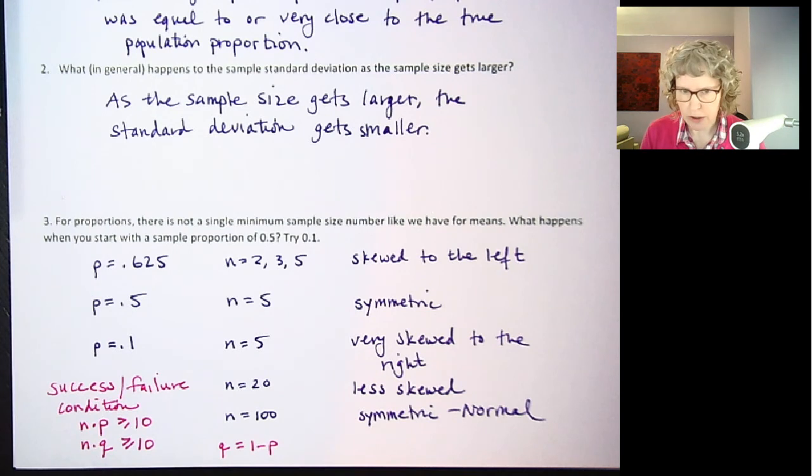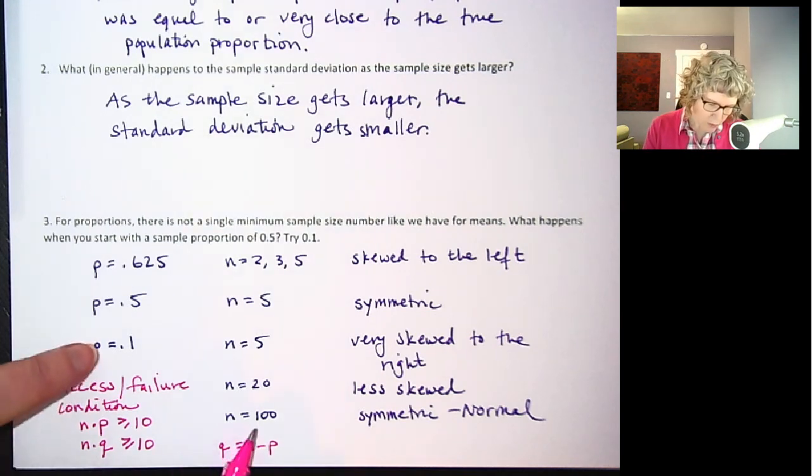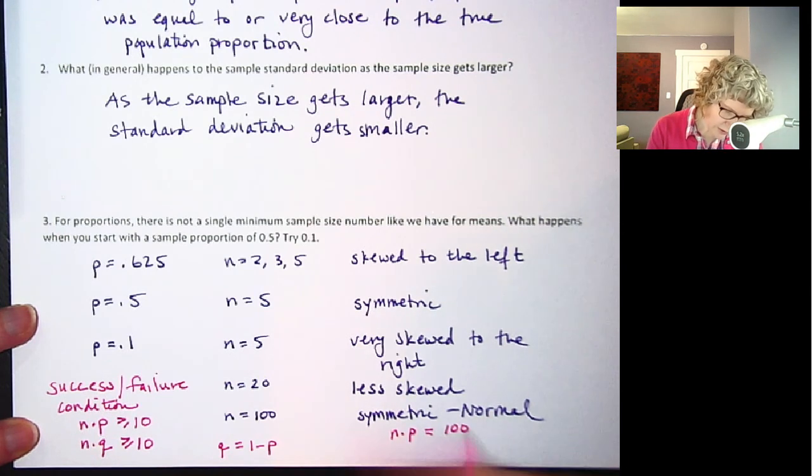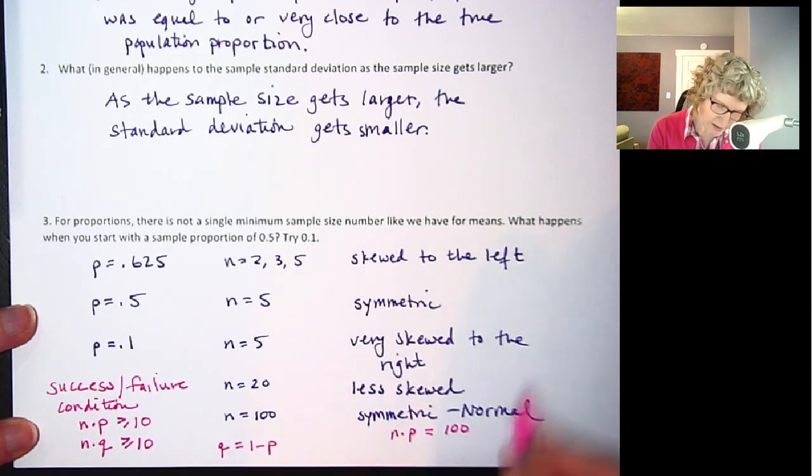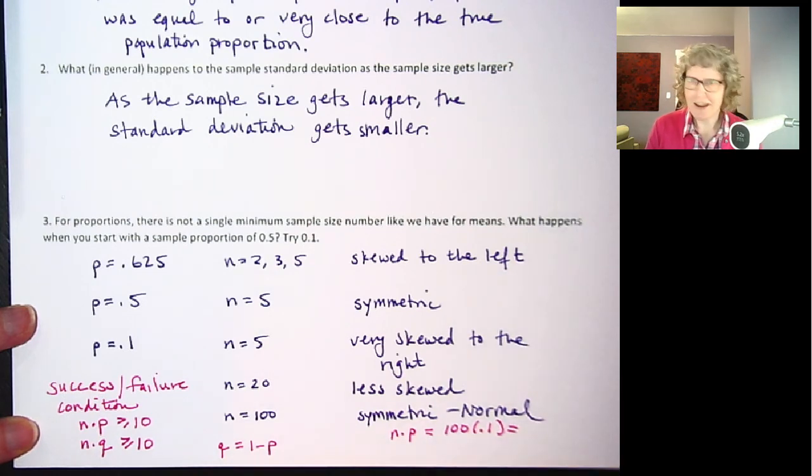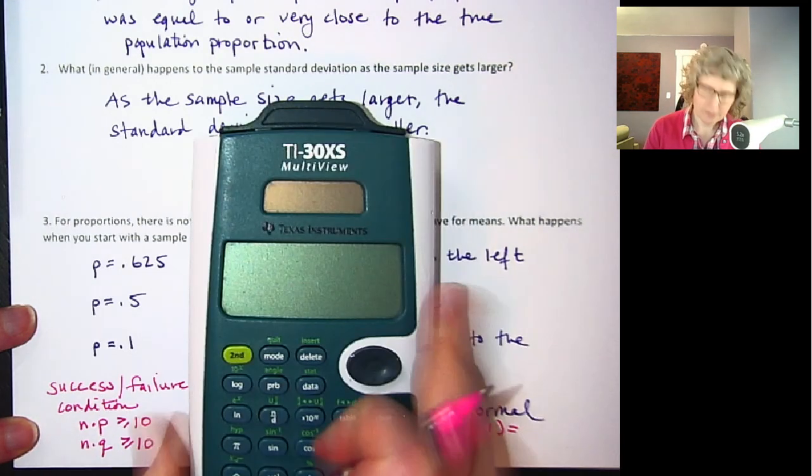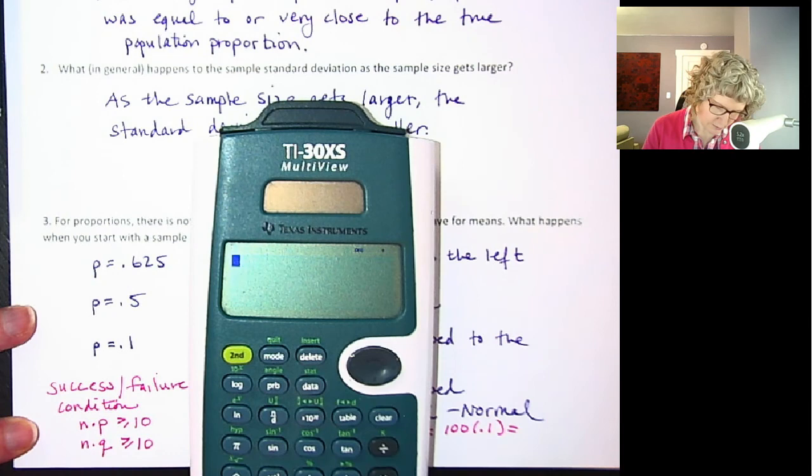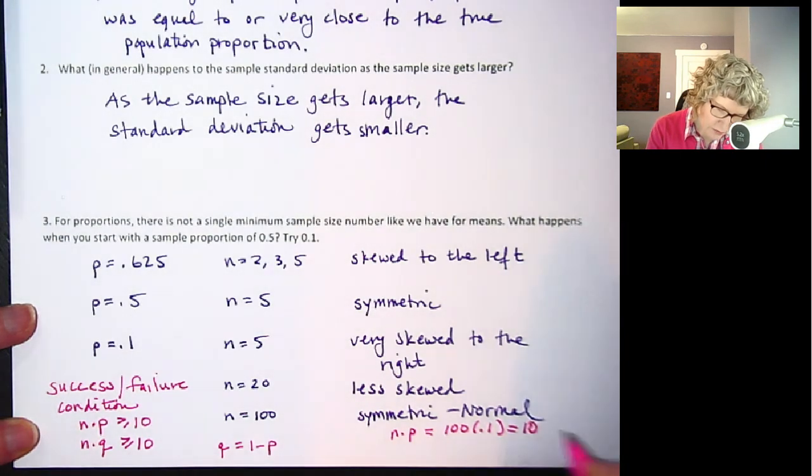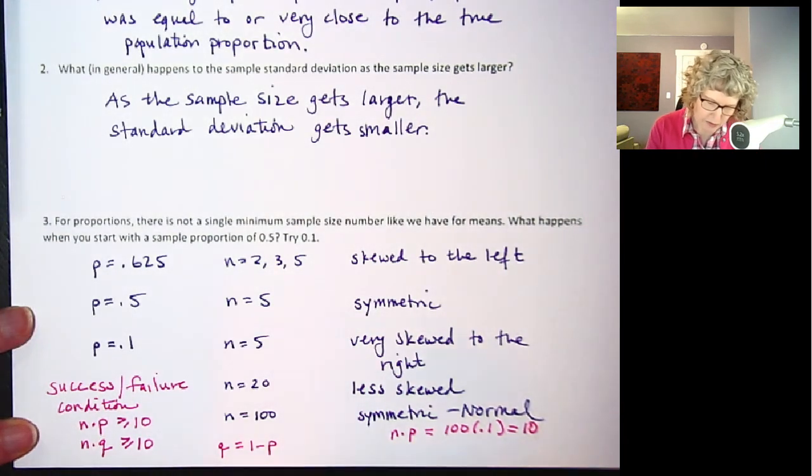So when I did the 0.1, when I did a sample size of 100, 100 times 0.1, that should be 10, right? 10% of 100 is 10. So that worked. That was greater than or equal to 10.